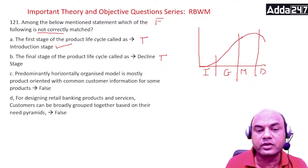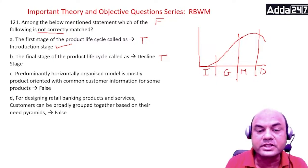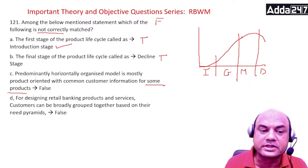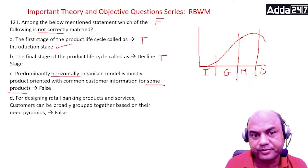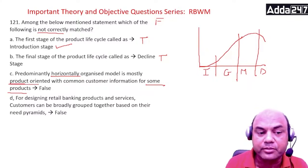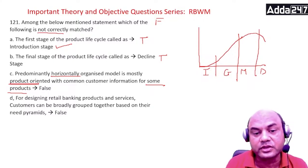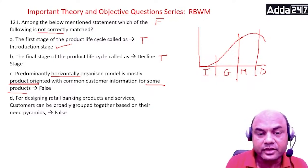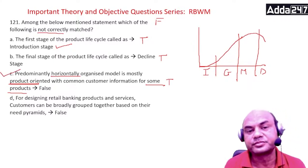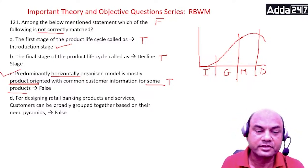Now looking at the predominantly horizontally organized model: it is mostly product oriented with common customer information for some products. Remember, predominantly horizontally organized means some data is shared among all products, and product oriented means data is shared within the same product but not with other products. So this statement is actually true — but it was given as false. Therefore, it is not correctly matched, and this is the answer.